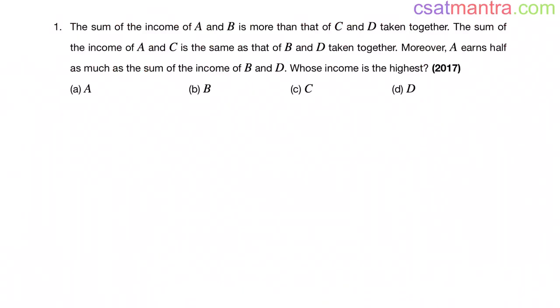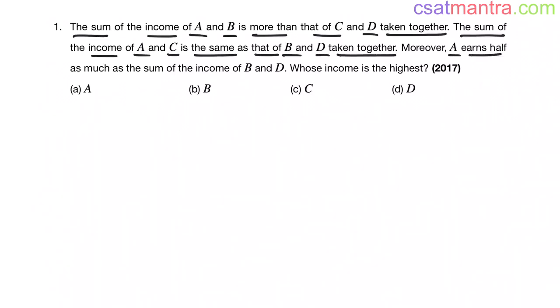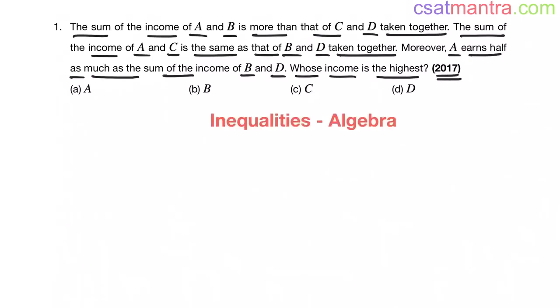The sum of the income of A and B is more than that of C and D taken together. The sum of the income of A and C is the same as that of B and D taken together. Moreover, A earns half as much as the sum of the incomes of B and D. Whose income is the highest? This question was asked in 2017 and is based on the inequalities concept from algebra.